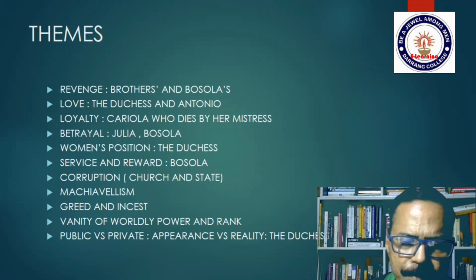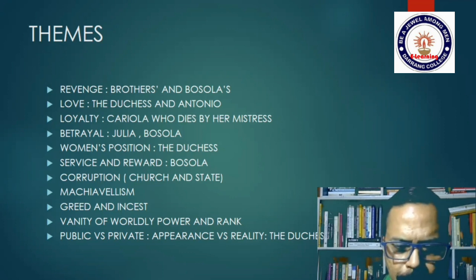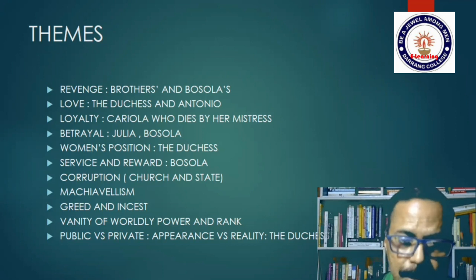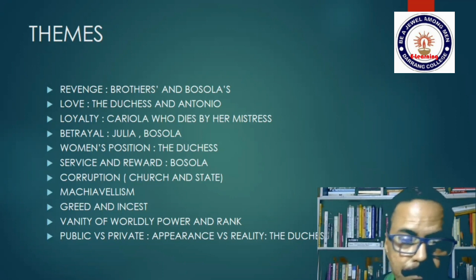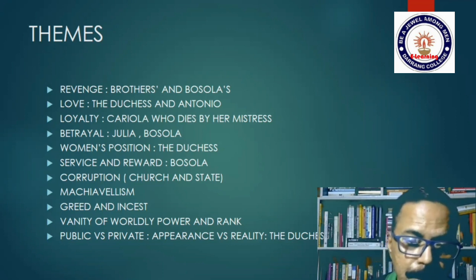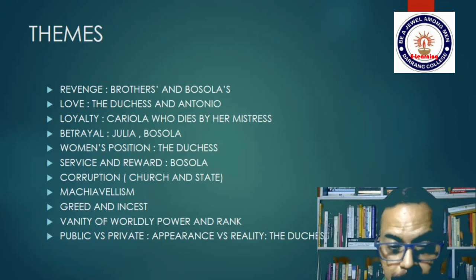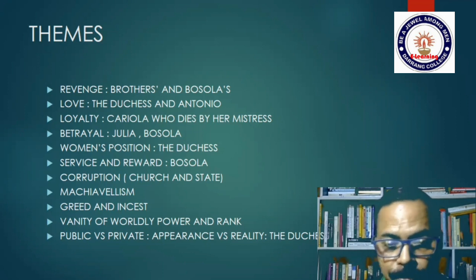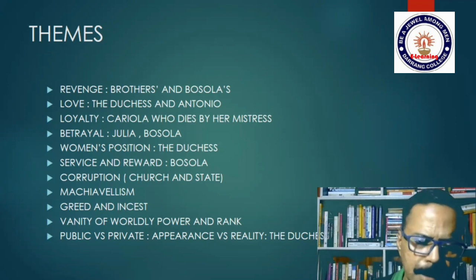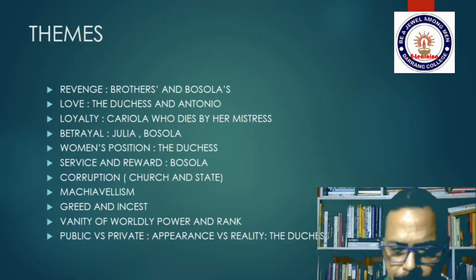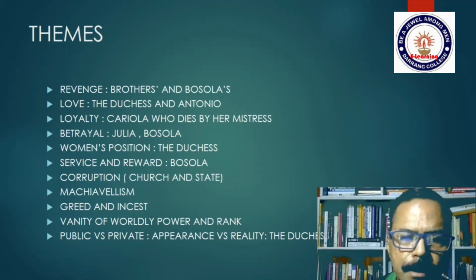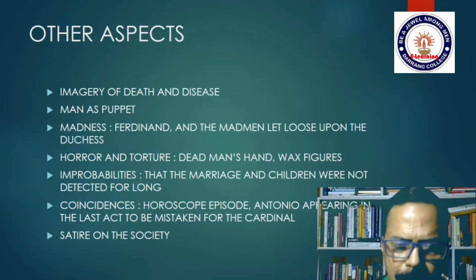Women's position is an important theme, closely linked with the public and private, appearance and reality theme. In public the Duchess holds an important position, but at home she is being dictated and controlled by her brothers. Service and reward is also an important theme with respect to Bosola. Corruption of the church and state, materialism, greed of the brothers, and incest in the case of Ferdinand are also key themes. The overarching sense we get reading the play is the vanity of worldly power and rank.